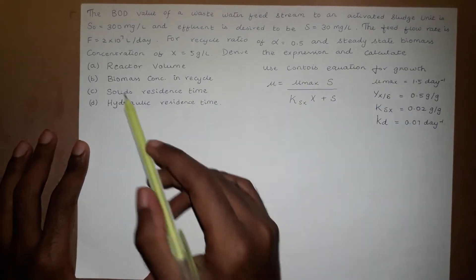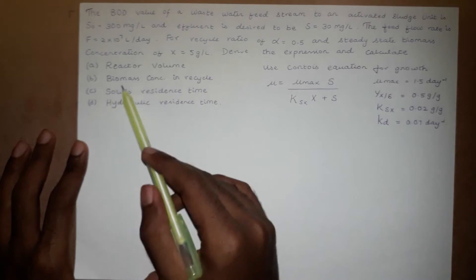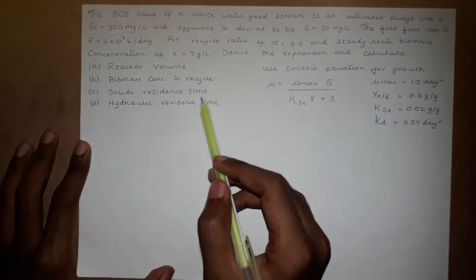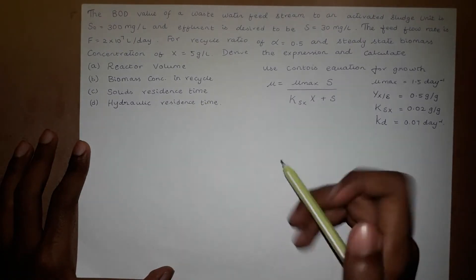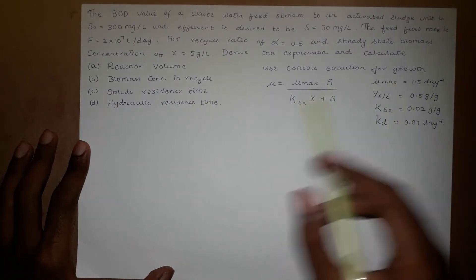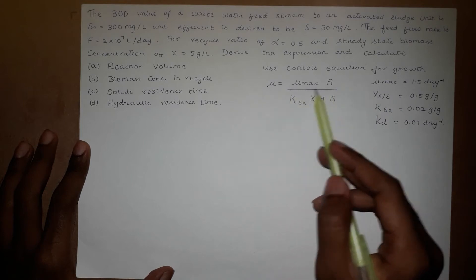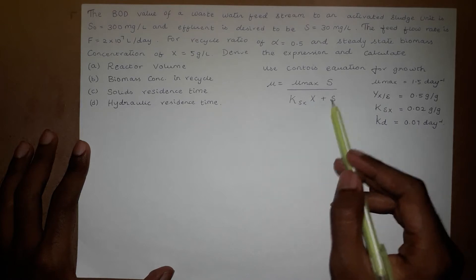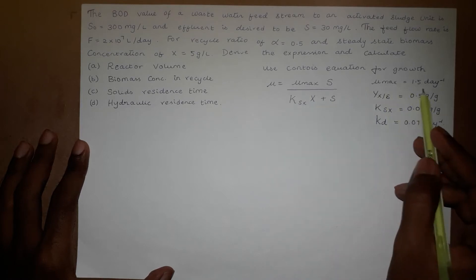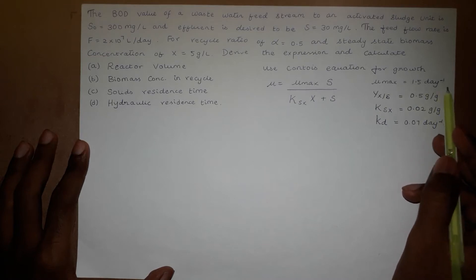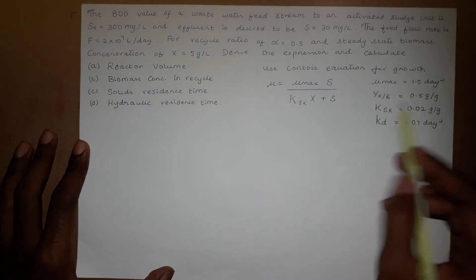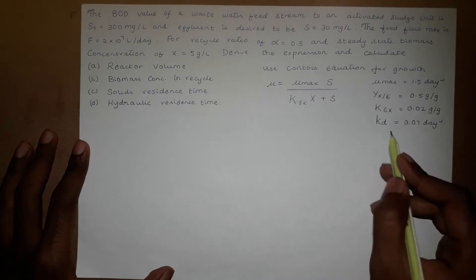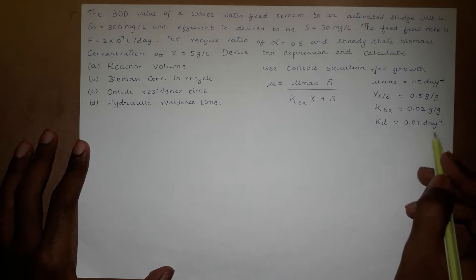Derive the expression and calculate: (a) the reactor volume, (b) the biomass concentration in recycle, (c) solids residence time, (d) hydraulic residence time. Use the Monod equation for growth: μ = μmax·S / (KSX·X + S). Kinetic constants: μmax = 1.5 day⁻¹, YX/S = 0.5 g/g, KSX = 0.002 g/g, Kd = 0.07 day⁻¹.